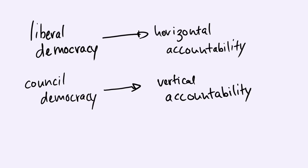Instead of relying on horizontal accountability, council democracy constructs vertical accountability. Points 2 and 3 are especially reflective of that. The imperative mandate becomes a powerful tool by which elected persons are held accountable. Similarly, the threat of recall alone ought to be sufficient in deterring divergence from adequate legislative or executive duties. Thus, elected individuals at any and all levels will be held accountable by the people who elected them directly, and not by parallel government structures. In such a context, the separation of powers and the American system of checks and balances appears antiquated.